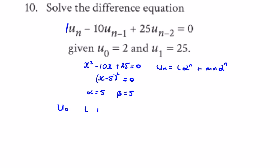For u_0, instead of having L + m, we have L + m·0 = u_0 = 2. Putting n = 0 in, we get L = 2.